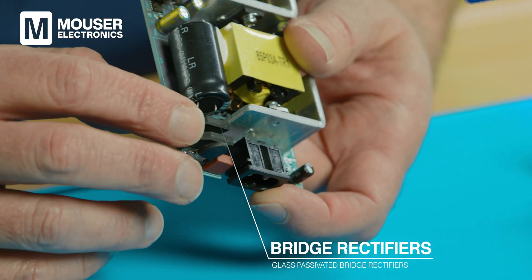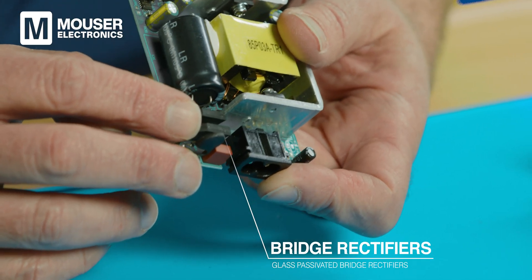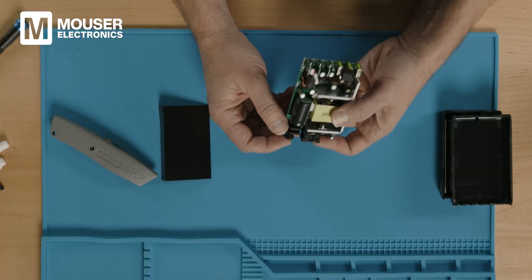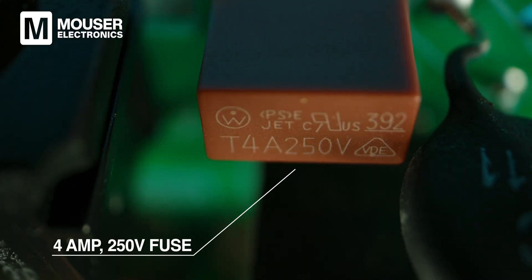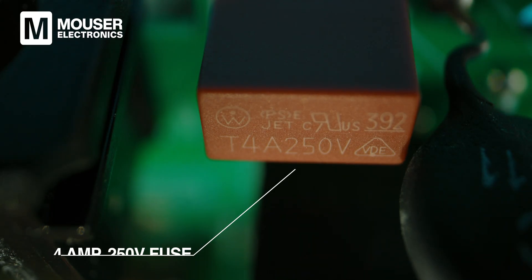These are KBP 410 glass passivated bridge rectifiers. If we zoom in on this fuse, you can see it's a four amp fuse rated for 250 volts.